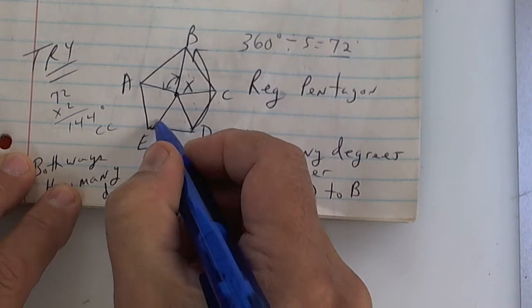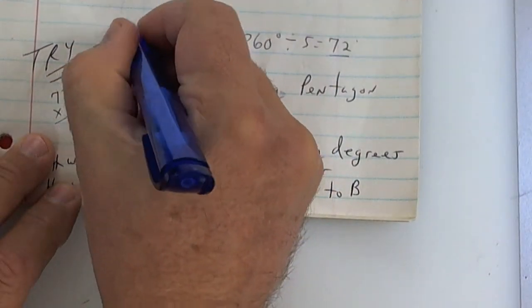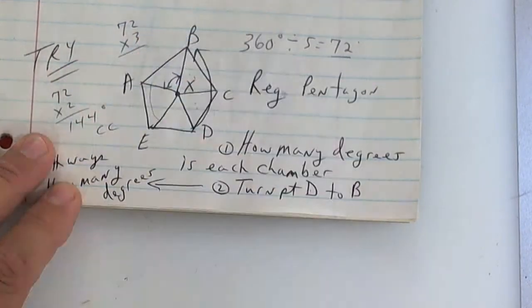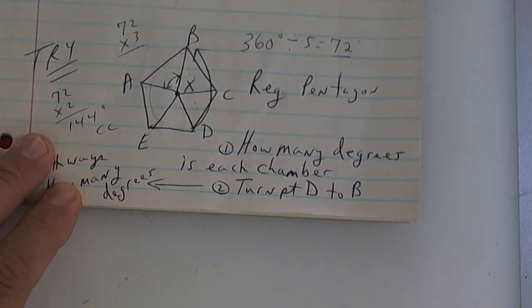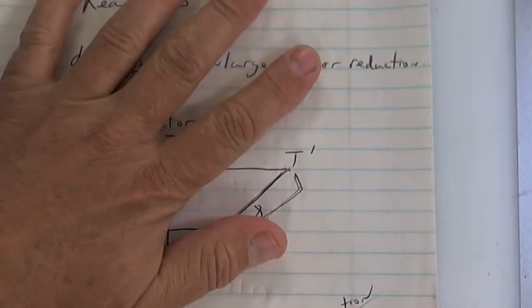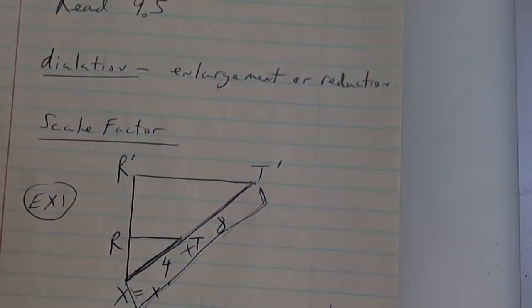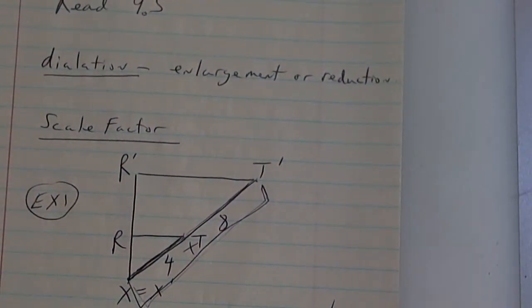If you go counterclockwise there are two chambers, so 72 times 2 which is 144 degrees counterclockwise. If you go the other way clockwise, it would be 72 times 3, 216. That's called rotational symmetry. You got to figure out how much each one's worth. If it's got five chambers it's 72, if it's got six it's 60.